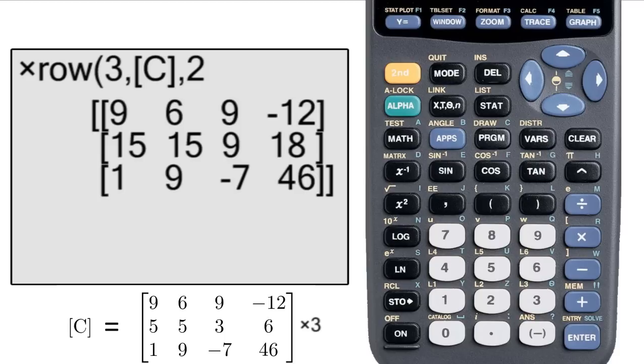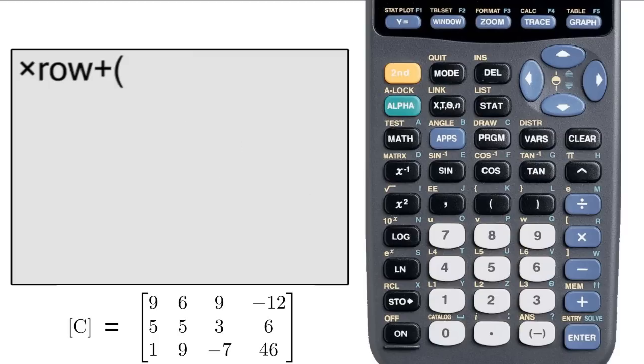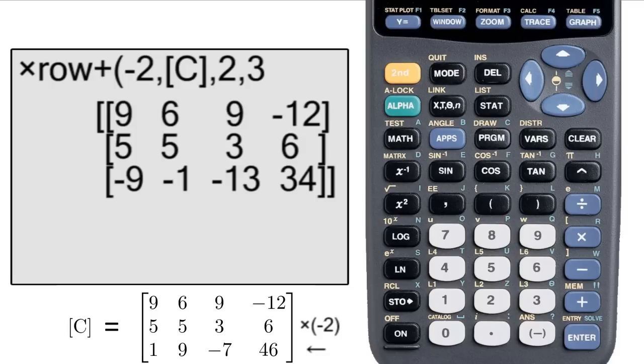Now for row addition, but this time with multiplication by a scalar. Select it from the menu. Select the scalar, select the matrix. Enter the row that you don't want to be replaced, which will also be the row that's multiplied by the scalar. Enter the row that you want replaced. Hit enter and get your result.